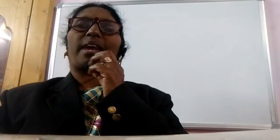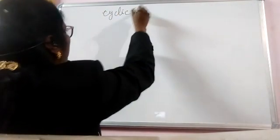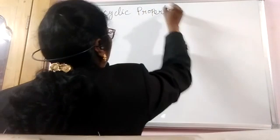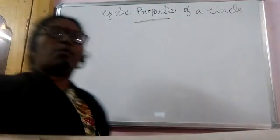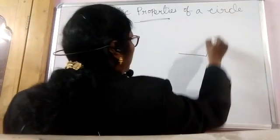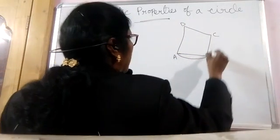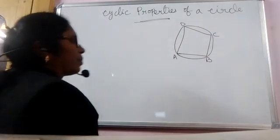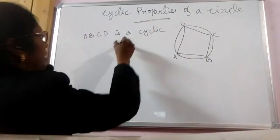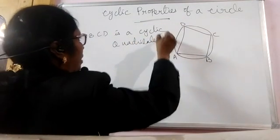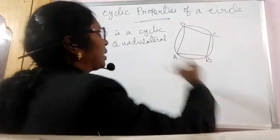Hi Friends! Now let us study the cyclic properties of a circle. What is a cyclic quadrilateral? Suppose ABCD is a quadrilateral and a circle passes through the vertices of this quadrilateral — then ABCD is a cyclic quadrilateral. We can say that a quadrilateral inscribed in a circle is a cyclic quadrilateral, meaning a circle can pass through the vertices of the quadrilateral.